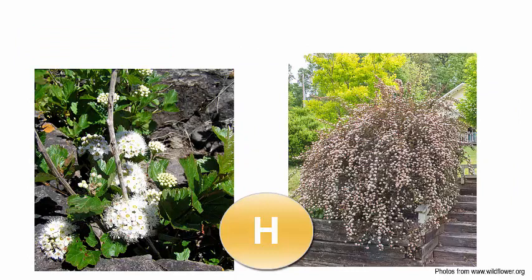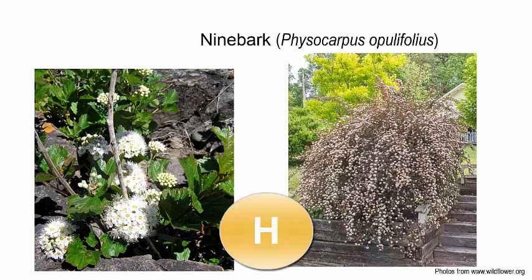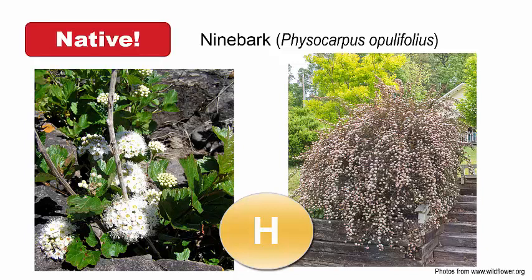The next one is ninebark, Physocarpus opulifolius — a native shrub. This is probably a nativar bred to have that red hue, but it's still the same genus and species we find in our natural areas. It has really pretty flaky bark that is attractive year-round, and when the leaves drop it still has something nice to look at. I see this in a lot of landscapes and it's nice to see a native shrub used there.